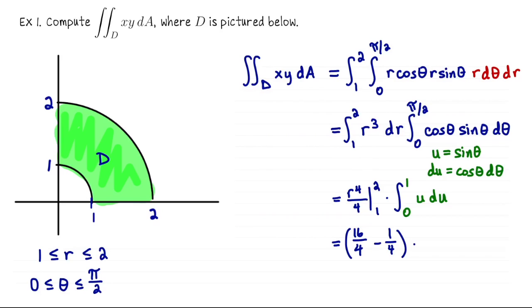Okay, so we get 2⁴/4, that's 16/4 minus 1⁴/4, times the antiderivative of u is u²/2. So u²/2 evaluated at 1, subtract off evaluating at 0. And overall, we're left with 15/8.